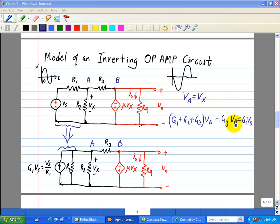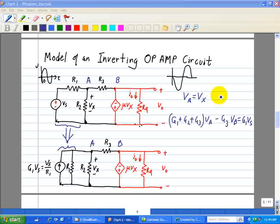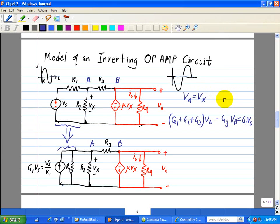Now we substitute the control source constraint, Vx, where Vb is equal to mu Vx. And in this case, we see it's an inversion, so we'll put a minus sign right here. Now Vb is really equal to, when you see this, it's equal to Va. So it's minus mu Va.